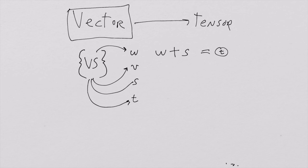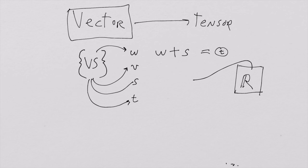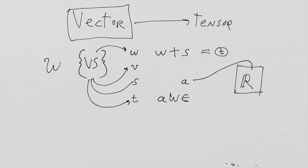The next thing you need is to be able to reach into a bucket of numbers — the real numbers. You need to be able to pull out any real number A and have a sense of how to multiply any vector from the vector space by this real number. That multiplication is called scalar multiplication, symbolized as the real number times the vector, and that product is an element of the vector space. Any scalar times a vector is also a vector in the space. The objects pulled from the real numbers are called scalars.